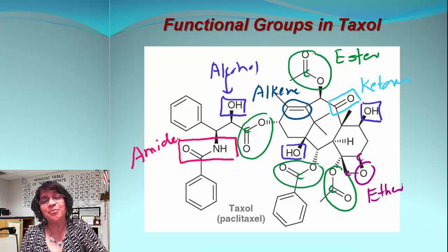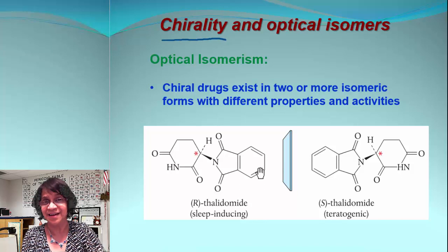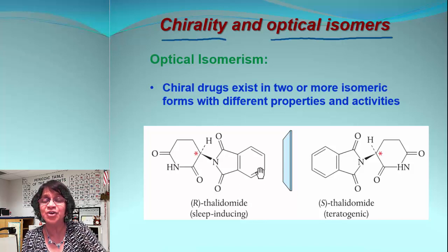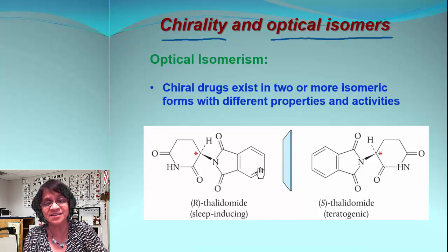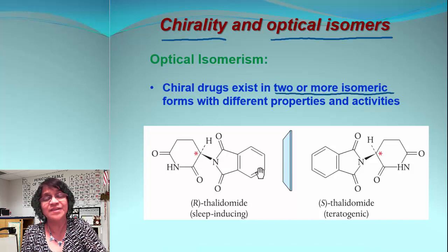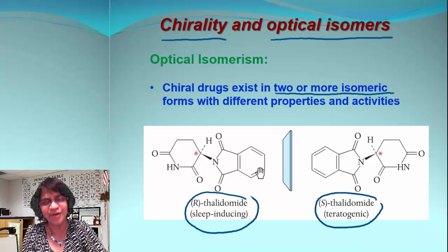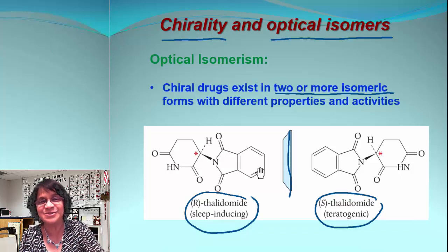So there you go — we have multiple functional groups in Taxol. Now, before we identify the chiral centers in Taxol, let's revisit what chirality is. Optical isomers must have at least one chiral center, and then these drugs will exist in two or more isomeric forms, which we call enantiomers. They will have different properties and different activities. The example already shown in my previous video is thalidomide — it is a mirror image of itself, so the two forms cannot be superimposed.